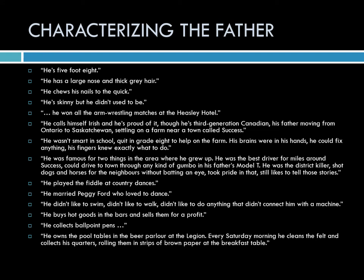Characterizing the father — creating the character of him. These are really almost simple things you might take for granted. He's five foot eight. He has a large nose and thick gray hair. He chews his nails to the quick. He's skinny, but he didn't used to be. He won all the arm wrestling matches at the Heasley Hotel. He calls himself Irish and he's proud of it, though he's third generation Canadian. His father moved from Ontario to Saskatchewan, settling on a farm near a town called Success. He wasn't smart in school, quit in grade eight to help on the farm. His brains were in his hands — he could fix anything. His fingers knew exactly what to do. We're seeing really mundane things, but they are stacked, so we're getting a really full picture. It is not sentimental — it is factual.